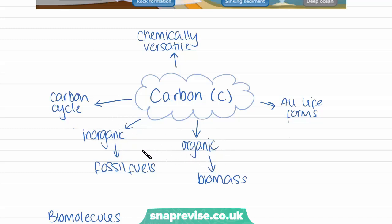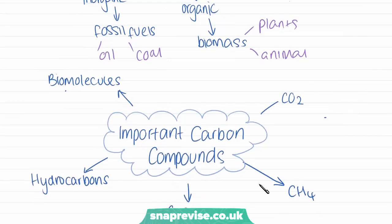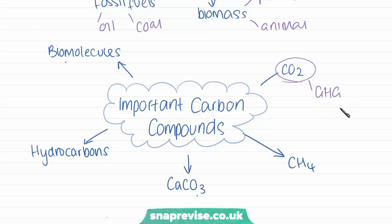Carbon can be found in two different forms: organic and inorganic carbon. Organic carbon is the type found in biomass — so in plants and animals. Inorganic carbon is carbon found in fossil fuels such as oil and coal. There are a variety of important carbon compounds to know about. The main one is carbon dioxide, which is a gas and a greenhouse gas. We also have methane, another greenhouse gas, also known as CH4.